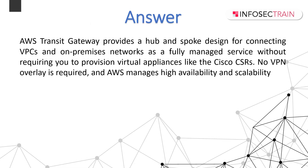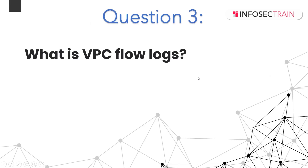Transit Gateway is a regional resource and can connect thousands of VPCs within the same AWS region. You can create multiple transit gateways per region, but transit gateways within an AWS region cannot be peered, and you can connect to a maximum of three transit gateways.